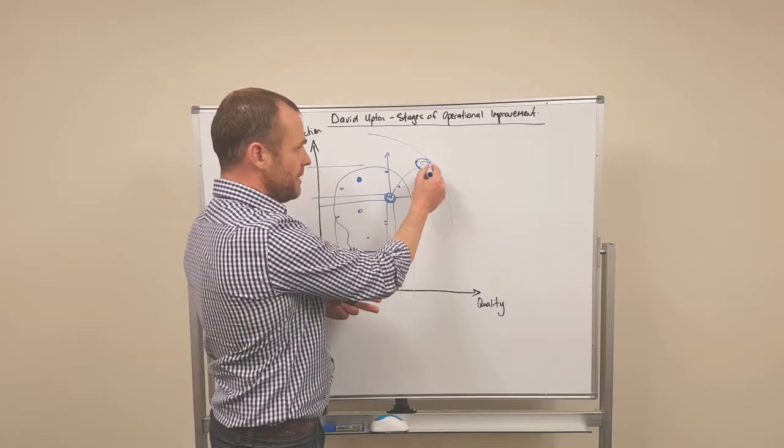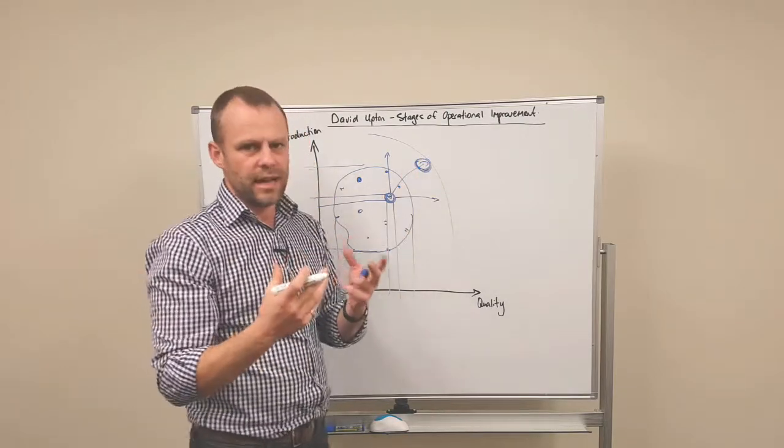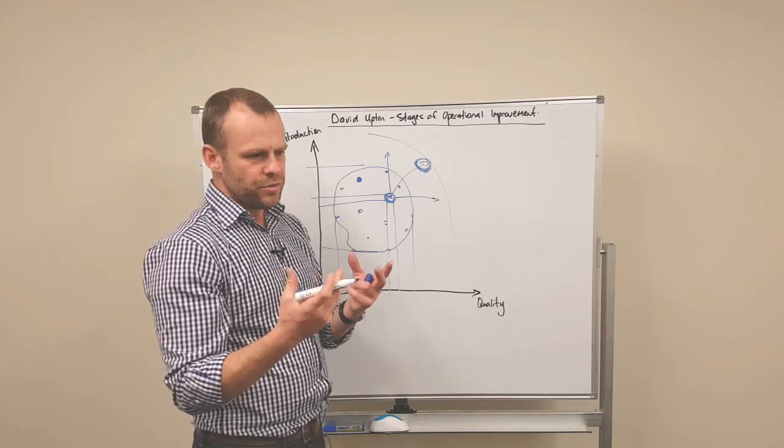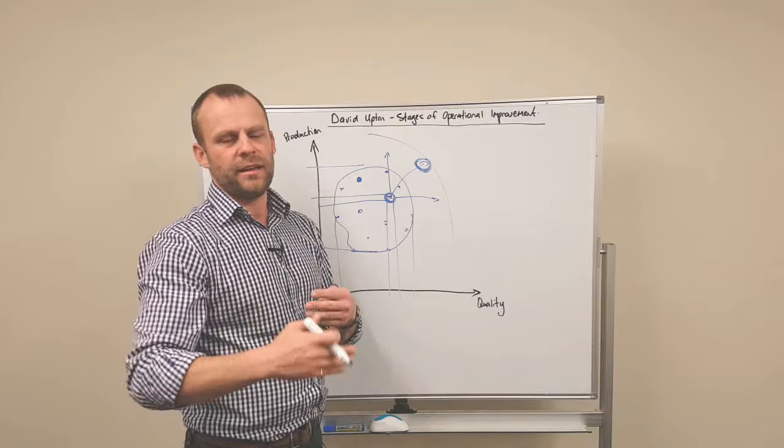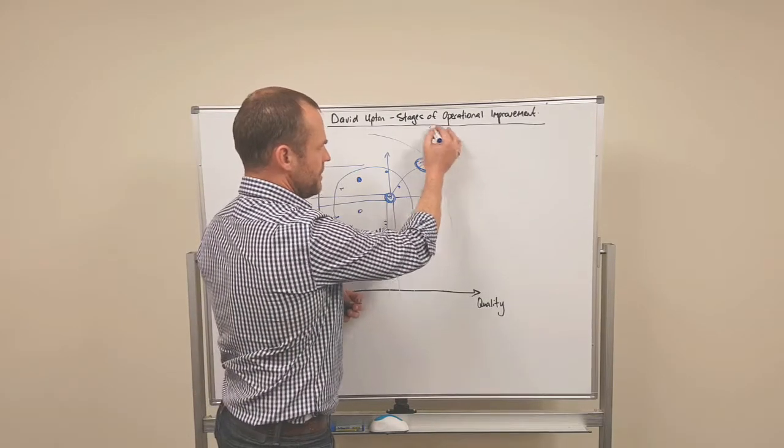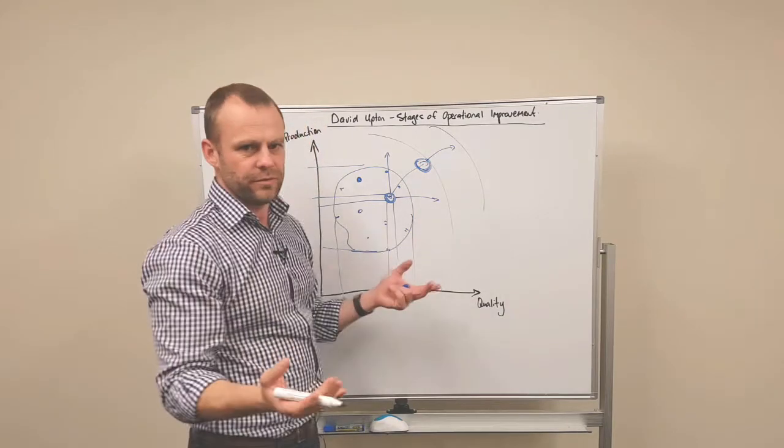Once you've done that, you've eked out every little last ounce out of the current system, then you can ask yourself, should we invest some money in increasing the capacity in the constraint? And that means you get to break the constraint and go out to another level of performance.